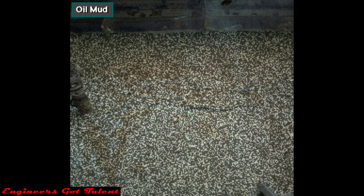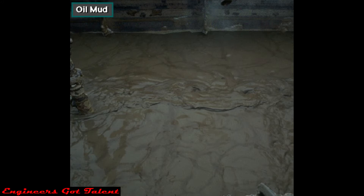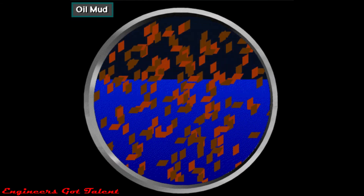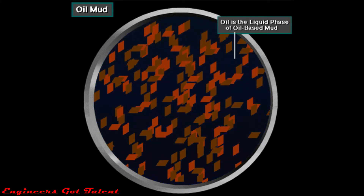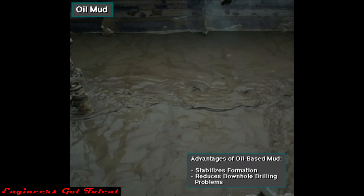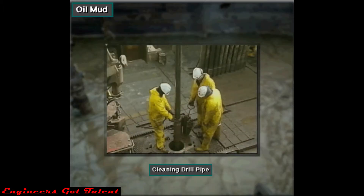At times, downhole drilling conditions require the crew to add oil to the mud. Or in some cases, crew members use oil instead of water as the base of the mud. This is called oil-based mud. Oil-based mud has many advantages. It can stabilize the formation and reduce downhole drilling problems. However, it is harder for the crew to work with because it can create slippery conditions and environmental precautions must be used.